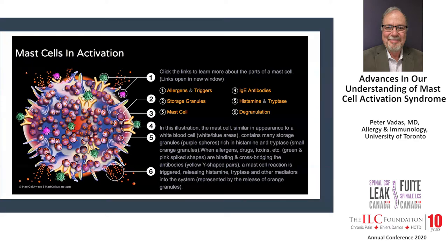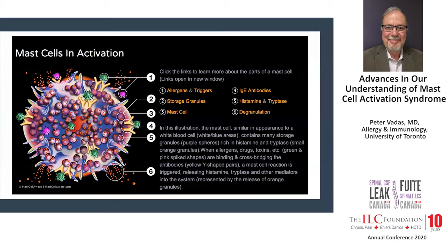On the cell surface of mast cells are receptors. There's one important receptor which binds to IgE, the allergy-causing antibody — that's called the IgE receptor. There's a second important receptor called the KIT receptor, spelled K-I-T, which binds another molecule that helps regulate mast cell growth, maturation, and activation. Sometimes the KIT receptor becomes mutated, driving the mast cell to proliferate and form abnormally increased numbers in skin, bone marrow, or elsewhere — leading to systemic mastocytosis.